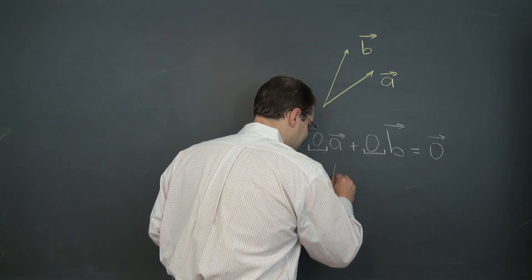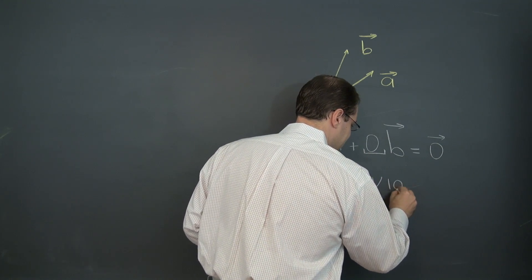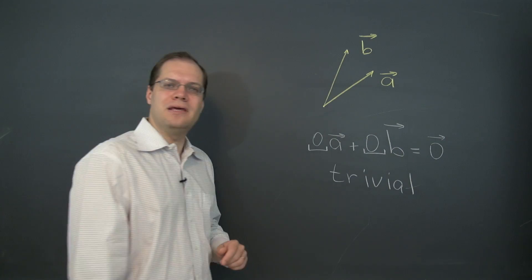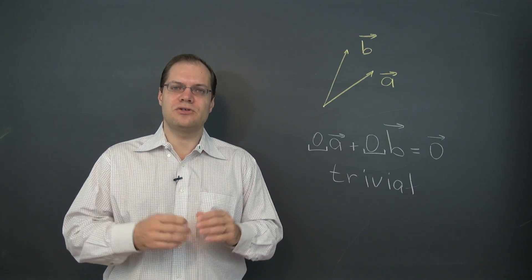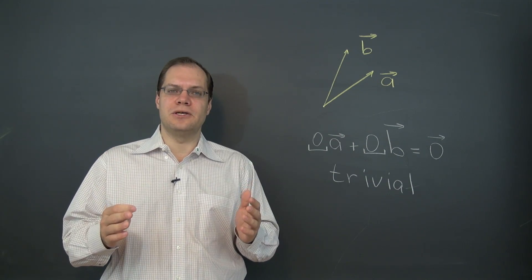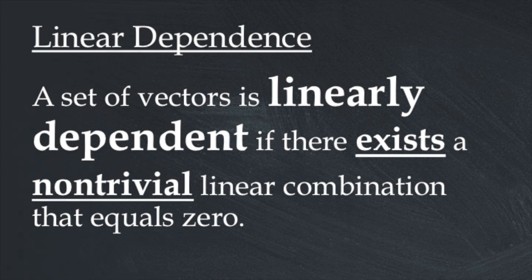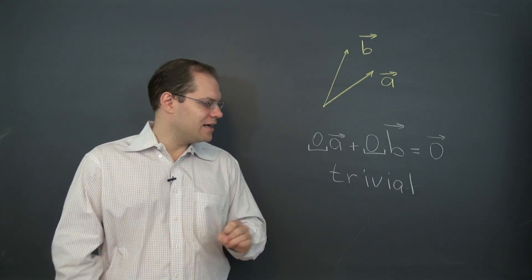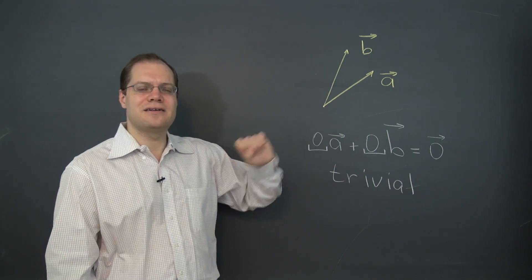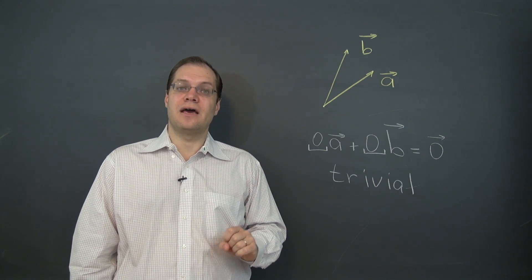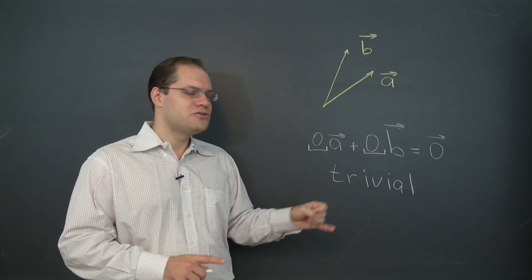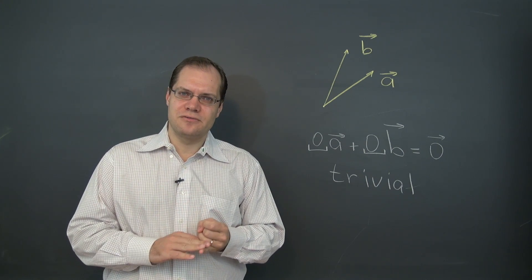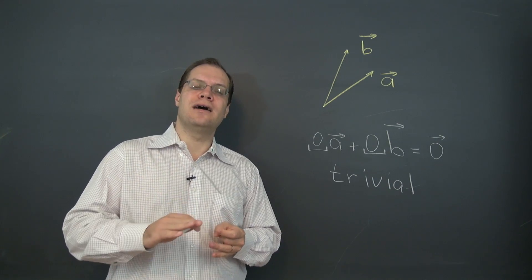This linear combination has a name: it's called the trivial linear combination. Trivial linear combination means that all coefficients are zero. So we should exclude it. The definition should read: a set of vectors is linearly dependent if there exists a non-trivial linear combination that equals zero. A non-trivial linear combination is the opposite of trivial. So if trivial has all coefficients zero, non-trivial means at least one coefficient is not zero.